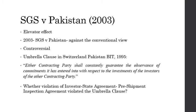The tribunal consisted of Judge Florentino P. Feliciano, who was the President, and Mr. Andre Forrest and Mr. Christopher Thomas as arbitrators. The decision led to a lot of controversy as regards the scope of the Umbrella Clause. The decision is contained in the Decision of the Tribunal on Objections to Jurisdiction dated 6th August 2003. The description to this video contains a link to the decision.